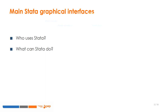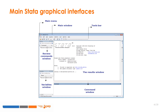The graphical interface of Stata is mainly composed of the main menu, toolbar, and four windows: the variables window, the command window, the review commands window, and the results window. We will review each of these windows in the following slides.